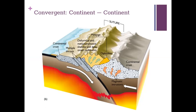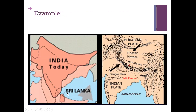In convergent continent-to-continent collision, we have the Himalayas as the prime example. The hard, relatively light continental crust of India is moving north into the Eurasian plate, creating enormous mountain building. You can see India moving north toward the Tibetan Plateau, creating the Himalayas. Continental-to-continental convergence creates the biggest mountain ranges.